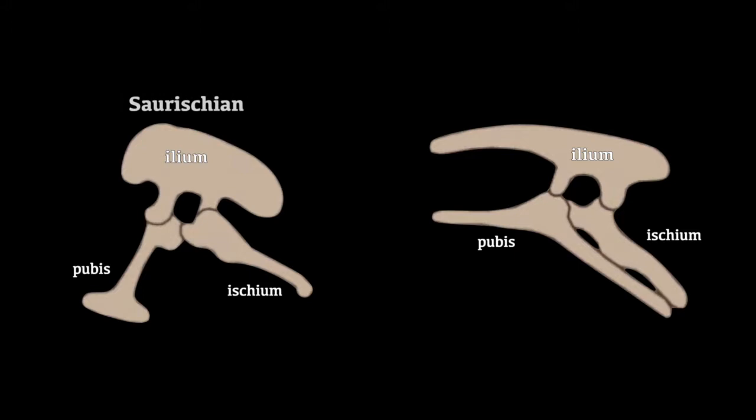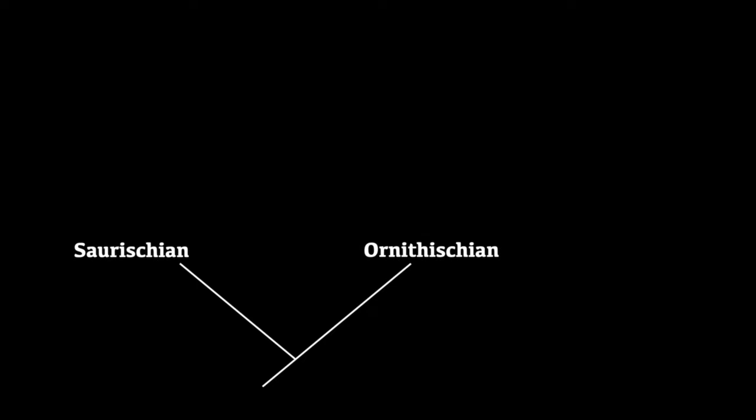Pointing forwards, it looks similar to a reptile's hip, so these were called the saurischians, or lizard-hipped dinosaurs. The others had a pubis that pointed backwards, resembling a bird, so these were called the ornithischians, or bird-hipped dinosaurs.